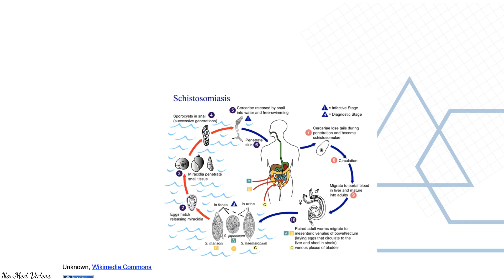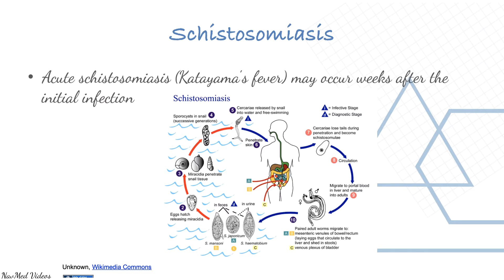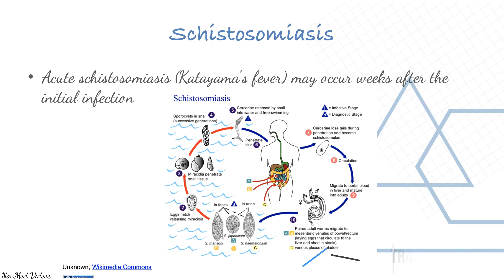This is how schistosomiasis develops. Acute schistosomiasis or Katayama fever may occur weeks after the initial infection. Step one: larvae are shed in feces and urine, eggs hatch and release miracidia, which penetrate snail tissues. Inside the snail, sporocysts develop and produce cercariae, which are then released by the snail into the water as free-swimming forms.